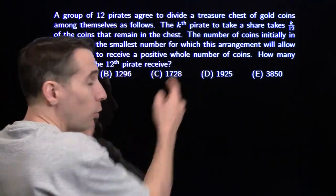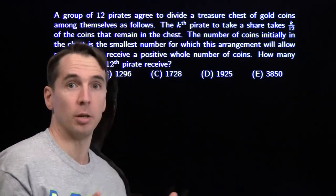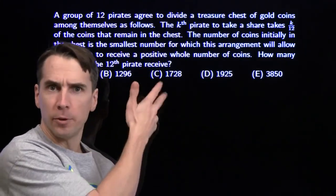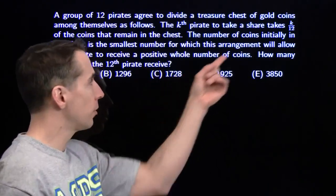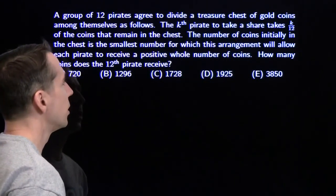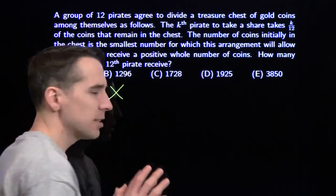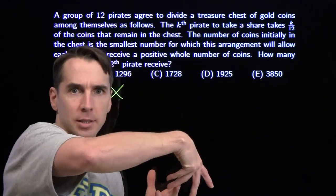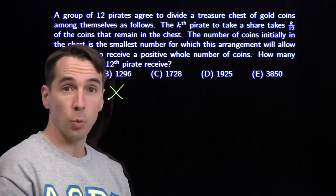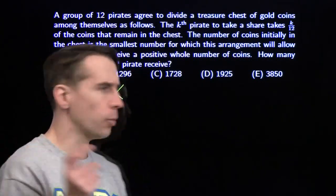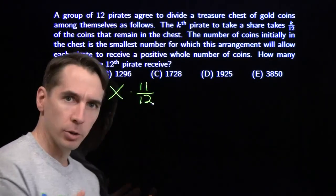Each pirate gets a positive whole number of coins, and the number of coins in the chest is the smallest number for which it's possible for each pirate to get a positive whole number of coins using this process. We're going to start with X, because X marks the spot. X is the number of coins in the chest at the beginning. The first pirate takes 1/12, leaving 11/12 remaining.